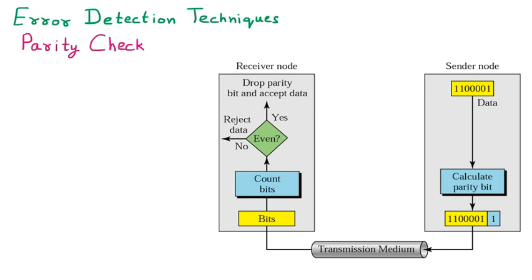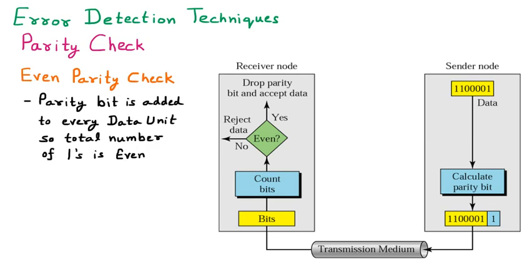First, we'll discuss even parity check. In even parity check, a parity bit is added to every data unit so that the total number of ones is even. This means the number of ones should be even in the data we are sending. To understand this, we'll focus on the diagram of even parity check.